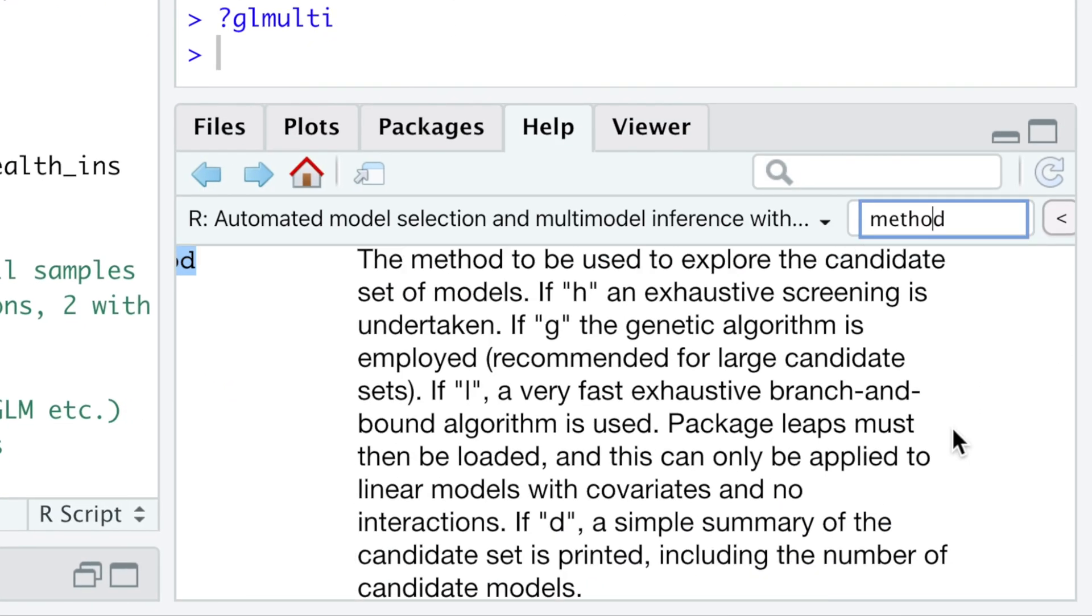If method is equal h, an exhaustive screening is undertaken, which means that all possible models will be created. If method is equal to g, the genetic algorithm is employed.